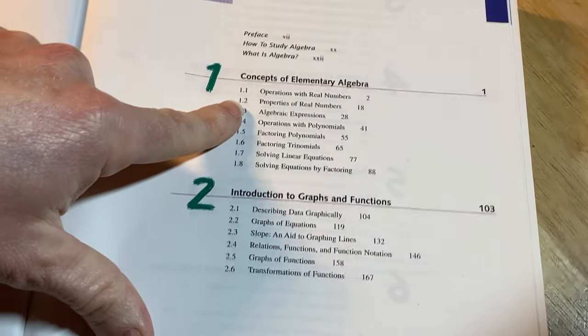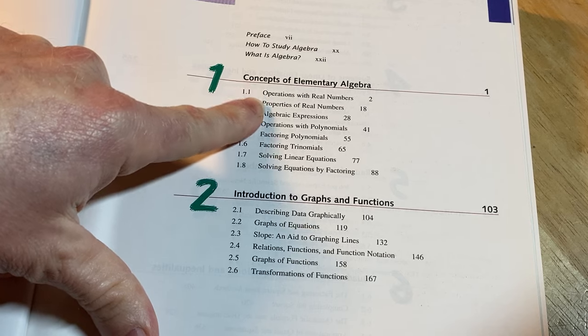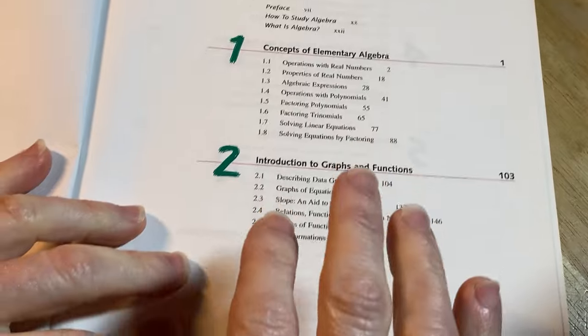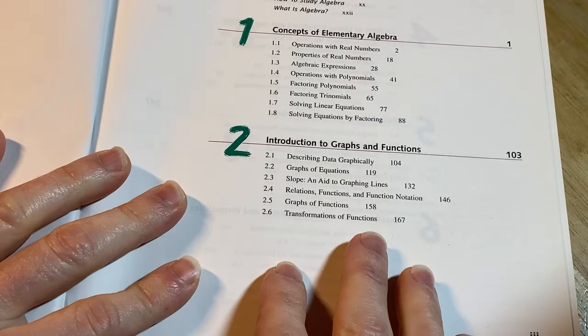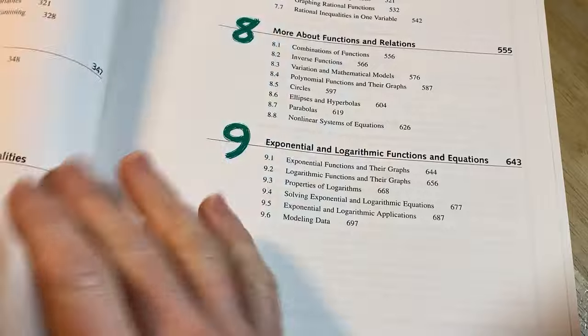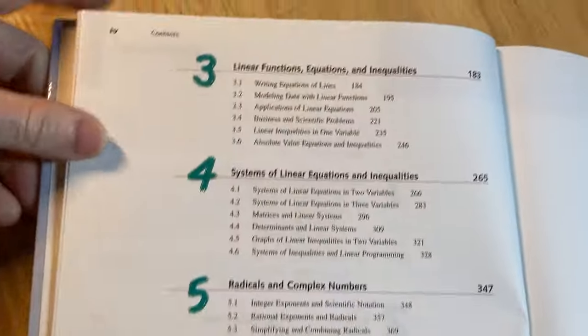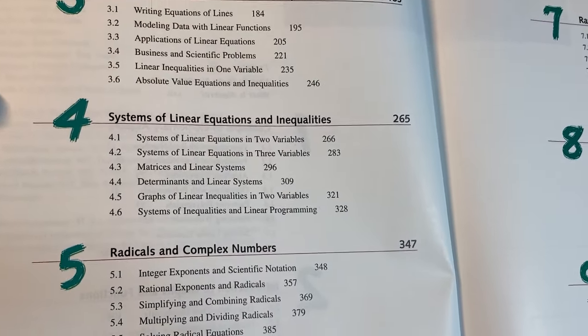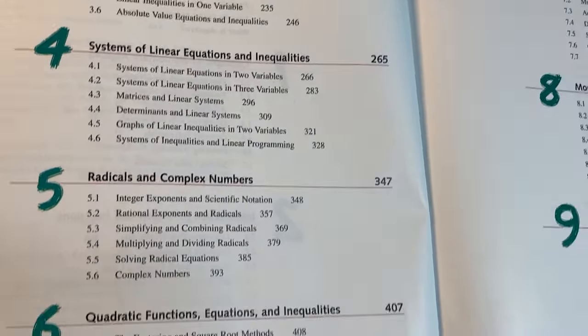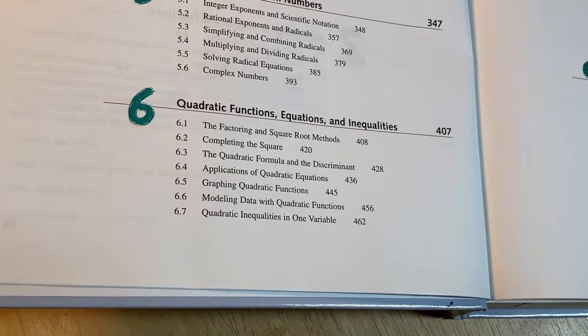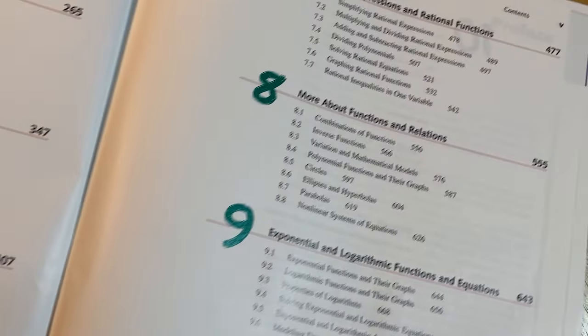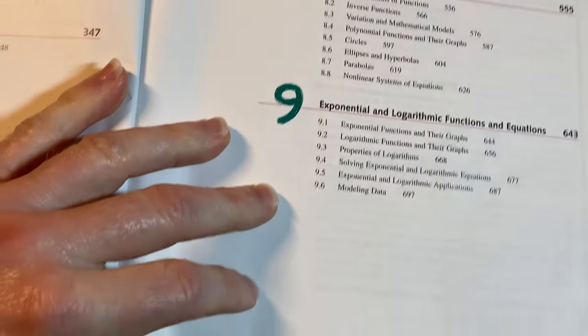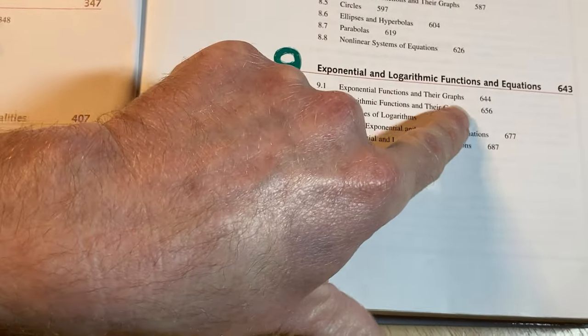And it starts from the very beginning. Concepts of elementary algebra, so operations with real numbers, properties of real numbers, really basic stuff. And then it jumps into graphs and functions right away which is pretty cool. Then it goes into linear functions, equations, and inequalities. Then systems of linear equations and inequalities. Radicals and complex numbers. Quadratic functions, equations, and inequalities. Rational expressions and rational functions. More about functions and relations. And then exponential and logarithmic functions and equations.